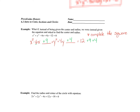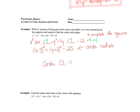Now factor: x² − 6x + 9 factors to (x − 3)², and y² + 4y + 4 factors to (y + 2)². Simplifying the right side: 12 + 9 + 4 = 25. So we have (x − 3)² + (y + 2)² = 25, which is center-radius form. The center is (3, −2) and the radius is 5 — you take the square root of 25.